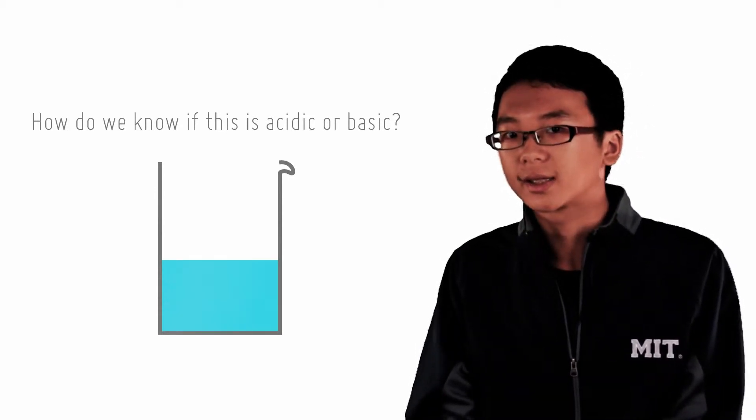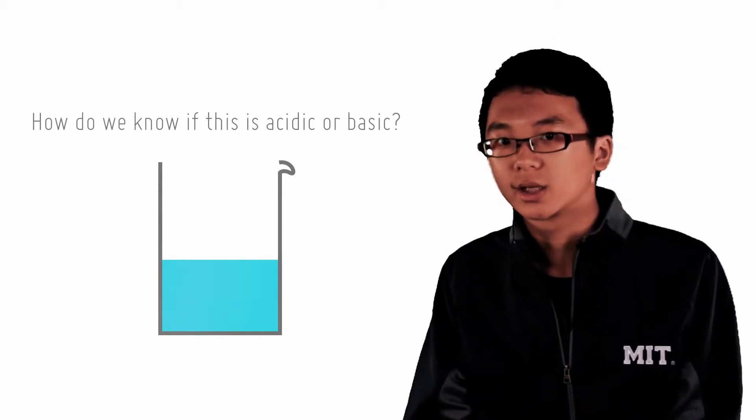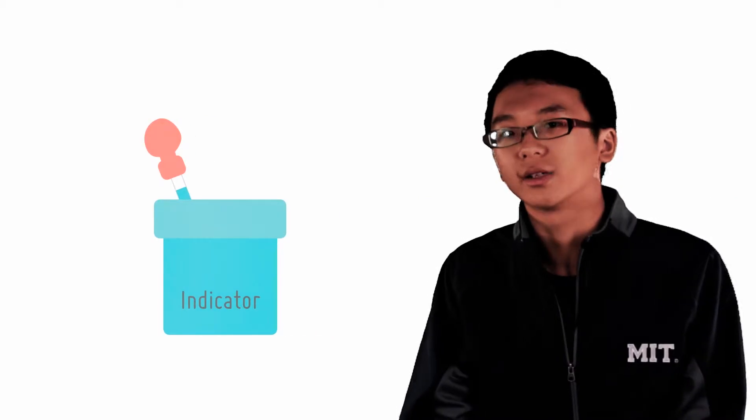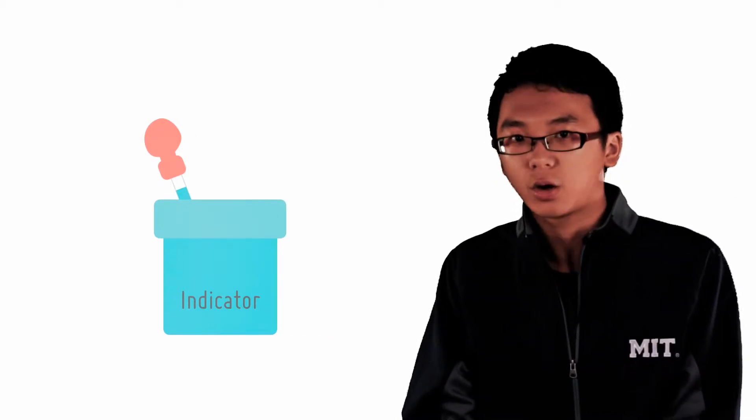So there exists a special type of compound called indicators, specifically acid-base indicators, because they tell you whether a solution is acidic or basic, or not at all.